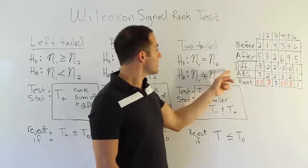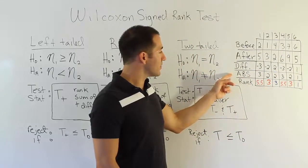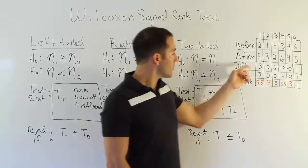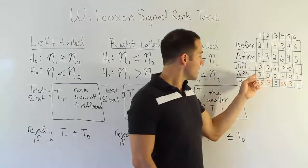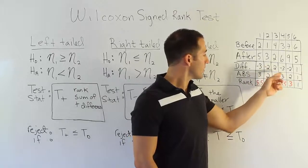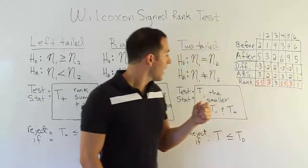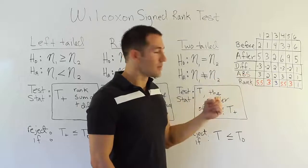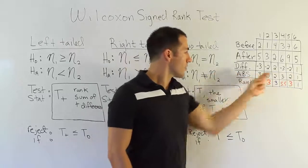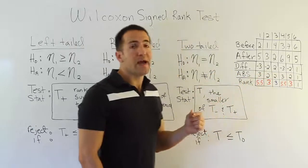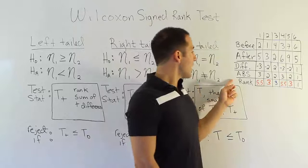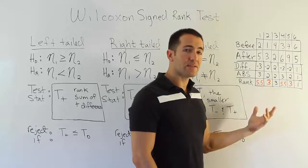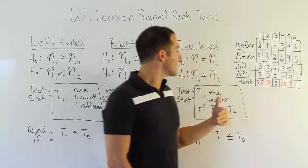What we're really trying to see is if the exercise routine works — if it helps people do more pull-ups at the end of the two-week period. We use this typical blocking technique where we take the difference between the before and after results and then analyze that data. In this procedure, what you want to do is take the absolute value — ABS — of those numbers. So 3, 2, 2, 3, 2, 1 becomes the result, and then you rank the absolute values.